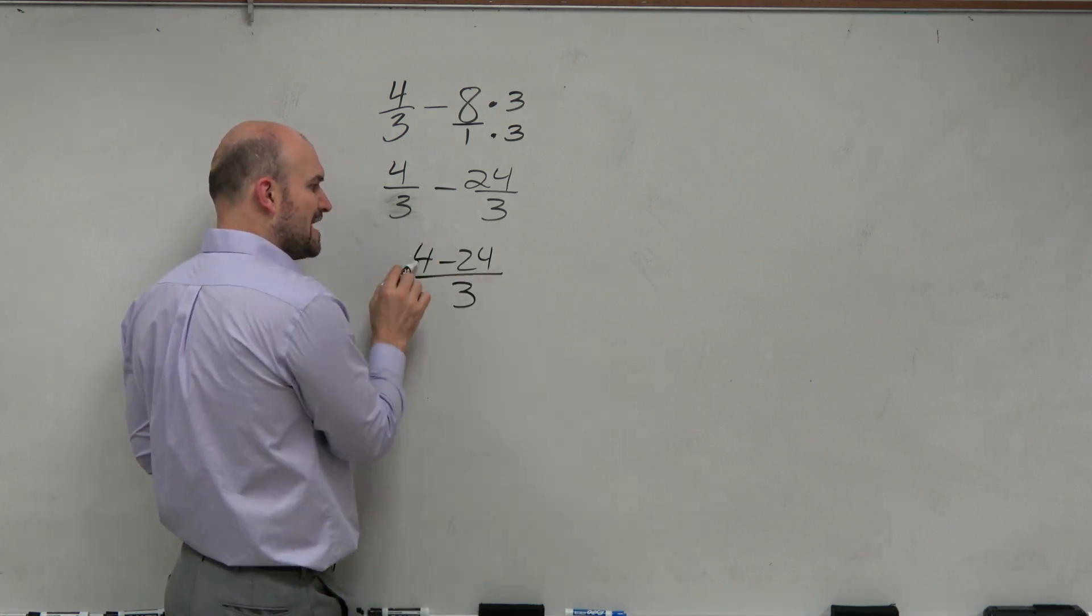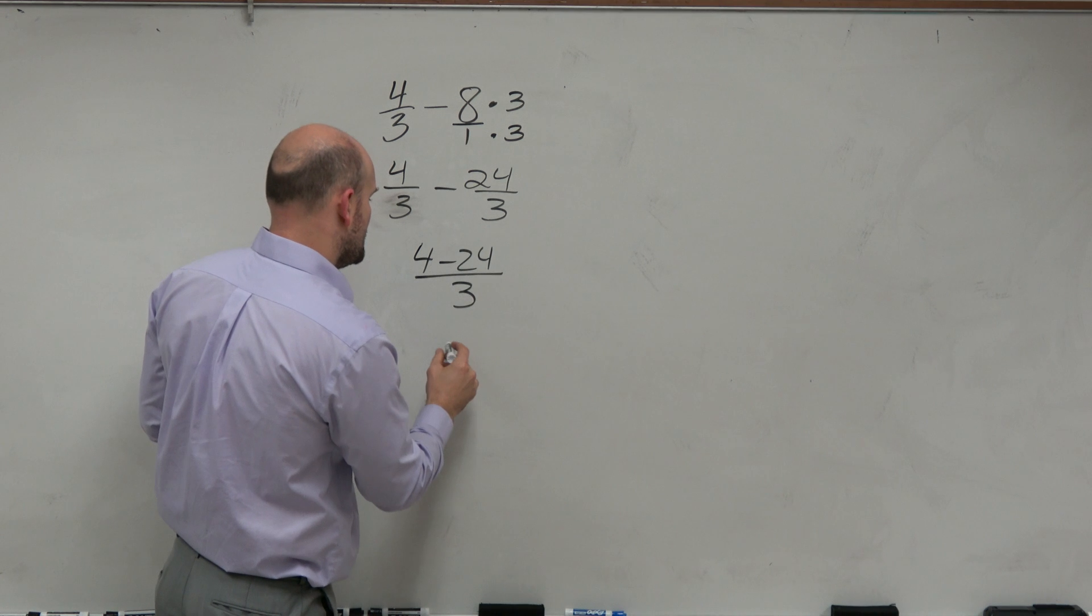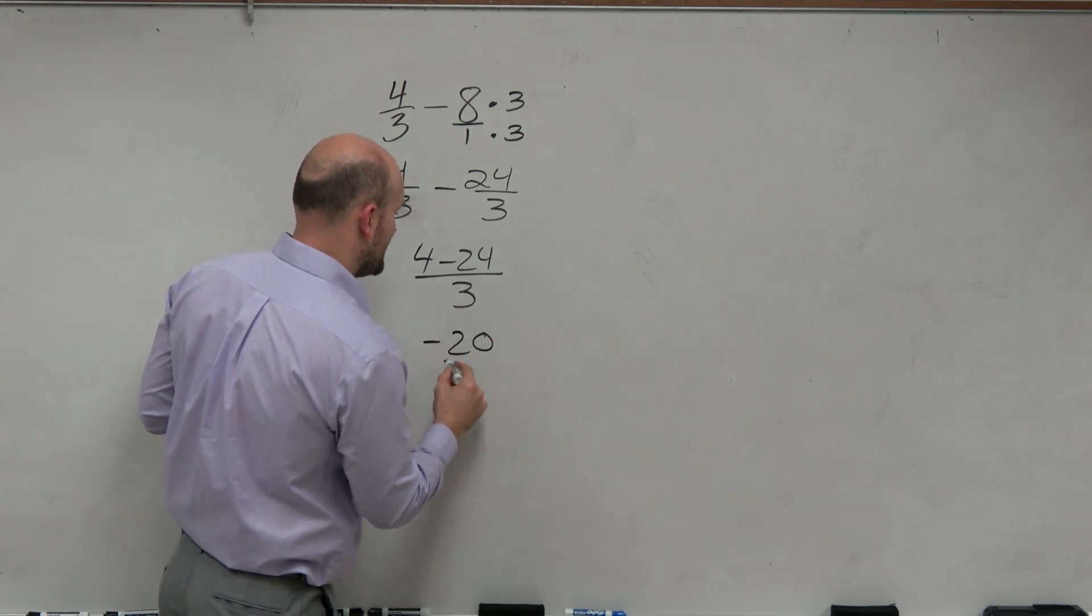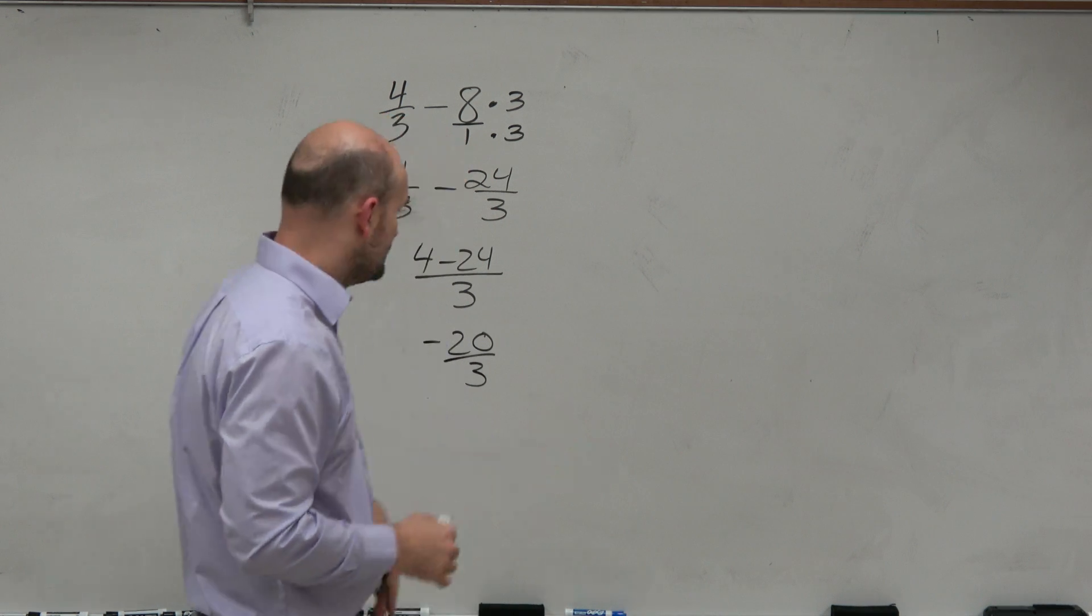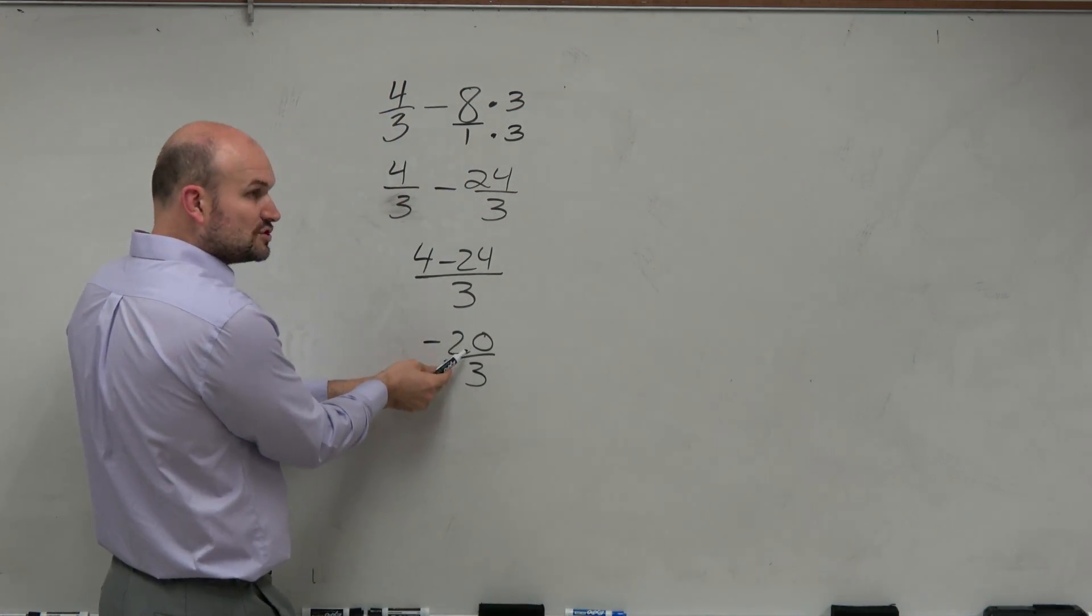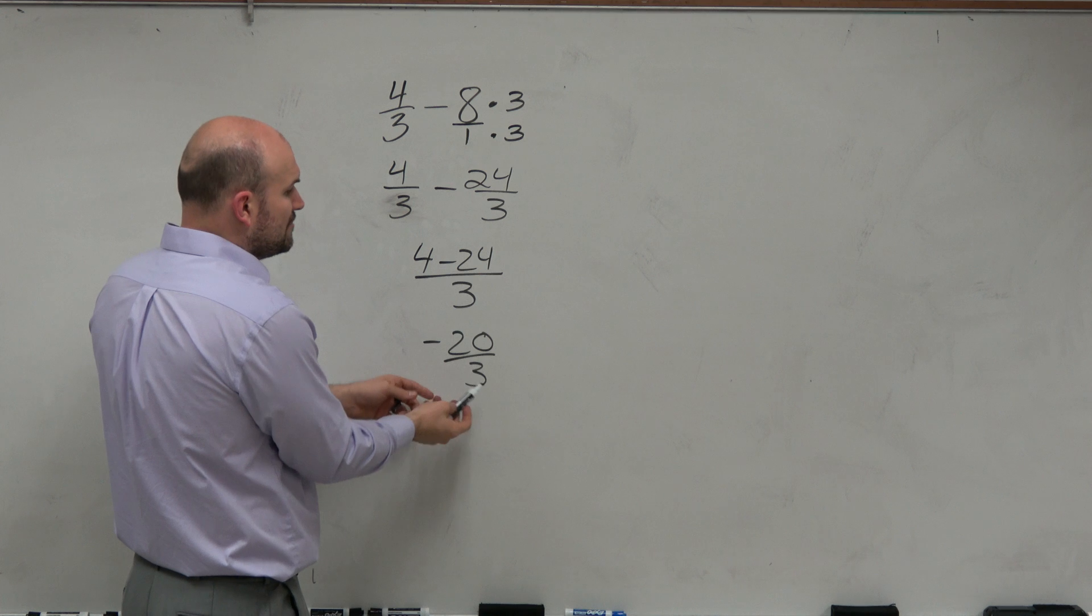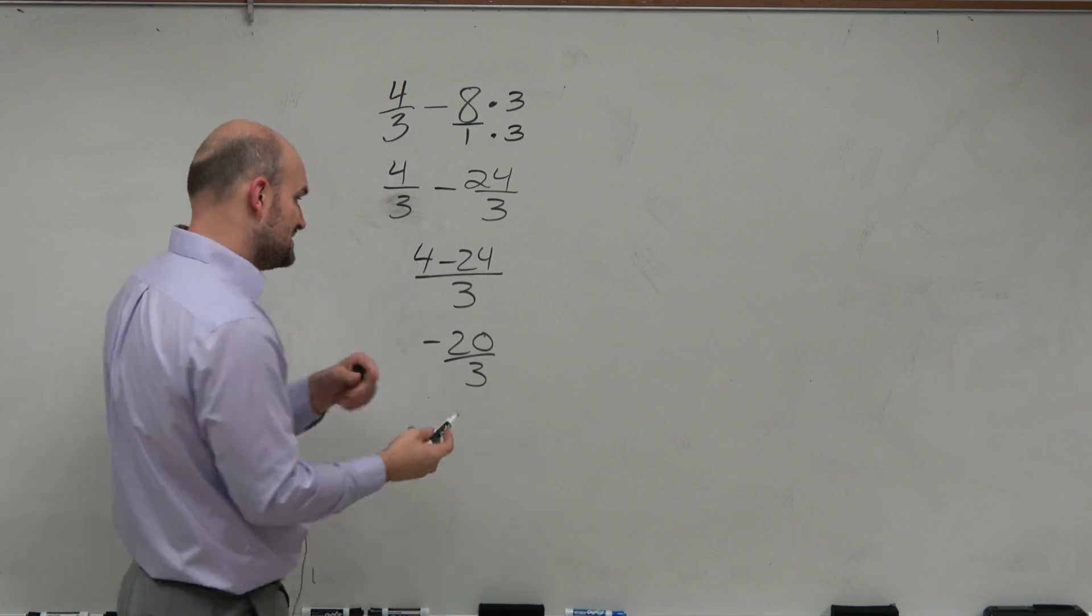And 4 minus 24, so if you have $4 and you owe me $24, then you now owe me $20 over 3. And we could write this as a mixed number by saying, how many times does 3 divide into 20 evenly? Well, the most number of times it divides there evenly is 6 times.